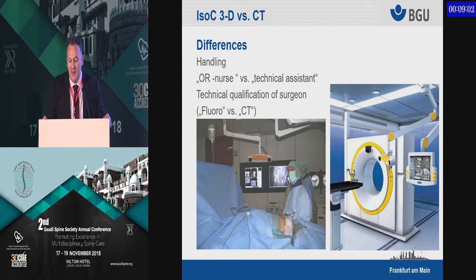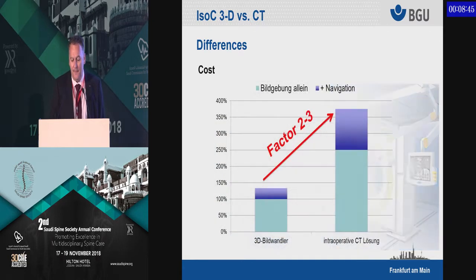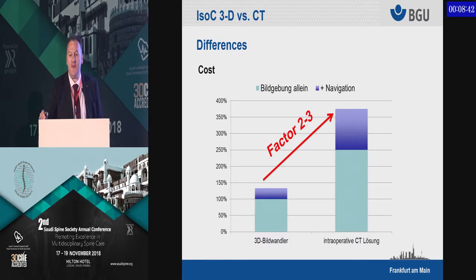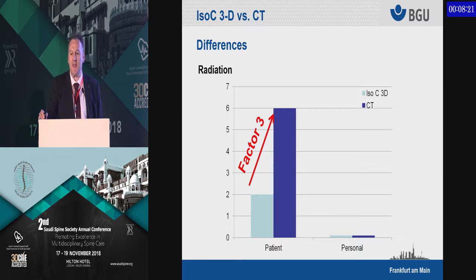Another difference is handling. Typically your fluoroscopy is handled by your OR nurse or OR personnel, while with a CT scanner you need a technical assistant — you or your radiologist has to be on the spot. Regarding costs, it's approximately a factor of 2 to 3 between 3D fluoroscopy and the CT scanner in the OR. Regarding radiation, it's a factor of 3 for your patient, though it is very similar for you and your personnel since you leave the OR when the scanner runs.